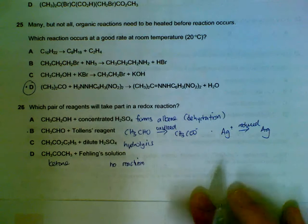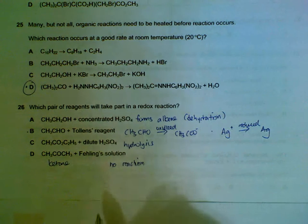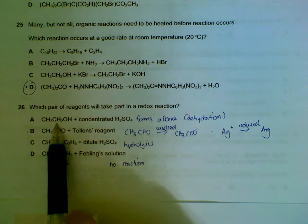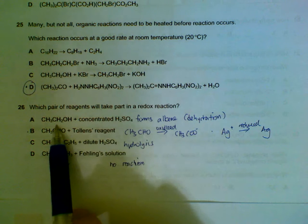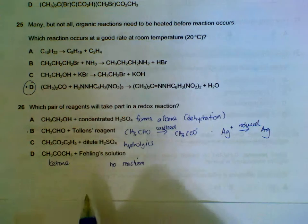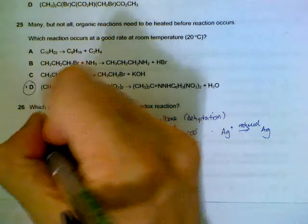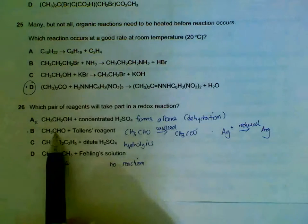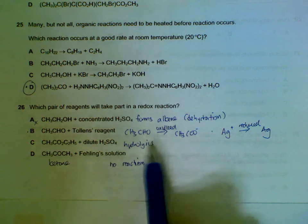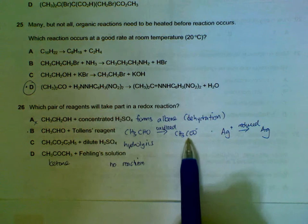Number 26: which one is actually a redox reaction? For option A, concentrated sulfuric acid dehydrates your alcohol to form an alkene — that is not a redox reaction. For option B, an aldehyde with Tollens' reagent: the aldehyde will be oxidized to a carboxylate salt.